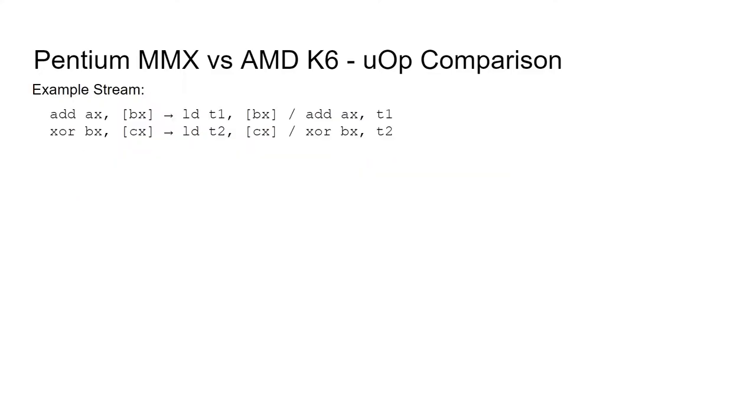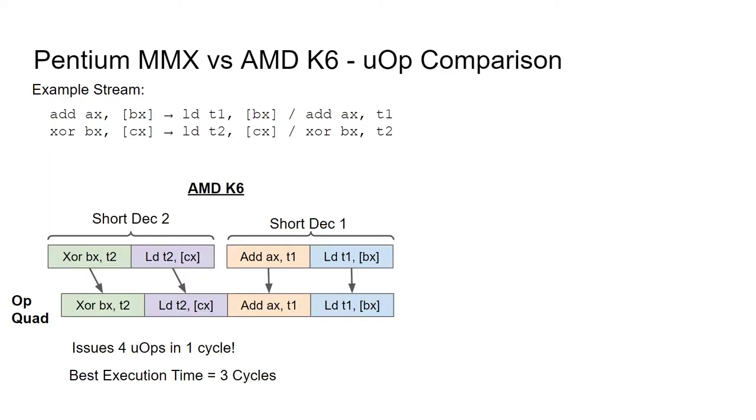Consider the following example instruction stream, containing two memory-to-register arithmetic operations. The first loads from the address of BX and adds the result to the value in register AX. The second loads from the address of CX and adds the result to the value in register BX. Both operations break down into a load micro-op, followed by an ALU micro-op. In the AMD K6, these two x86 instructions can be simultaneously decoded in short decoder 1 and short decoder 2. Each produces a load and an ALU micro-operation, and all four of them can be packed into a single op-quad. This means that the K6 will issue all four micro-ops in a single cycle.